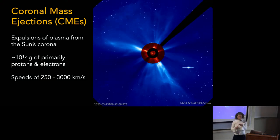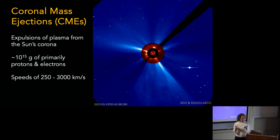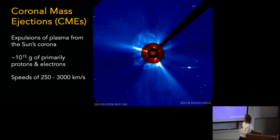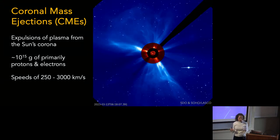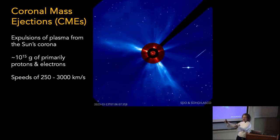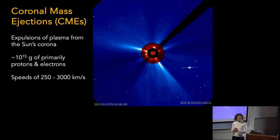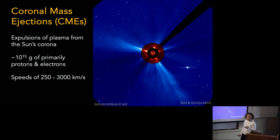The primary particles we're most concerned with are from coronal mass ejections, because they are the most energetic of the solar particles. These are huge expulsions of plasma from the sun's corona, typically about 10^15 grams per eruption, ranging by a couple of orders of magnitude, mostly made up of protons and electrons, with speeds between 250 and 3,000 km/s. Here's a movie of a coronal mass ejection taken from three instruments.